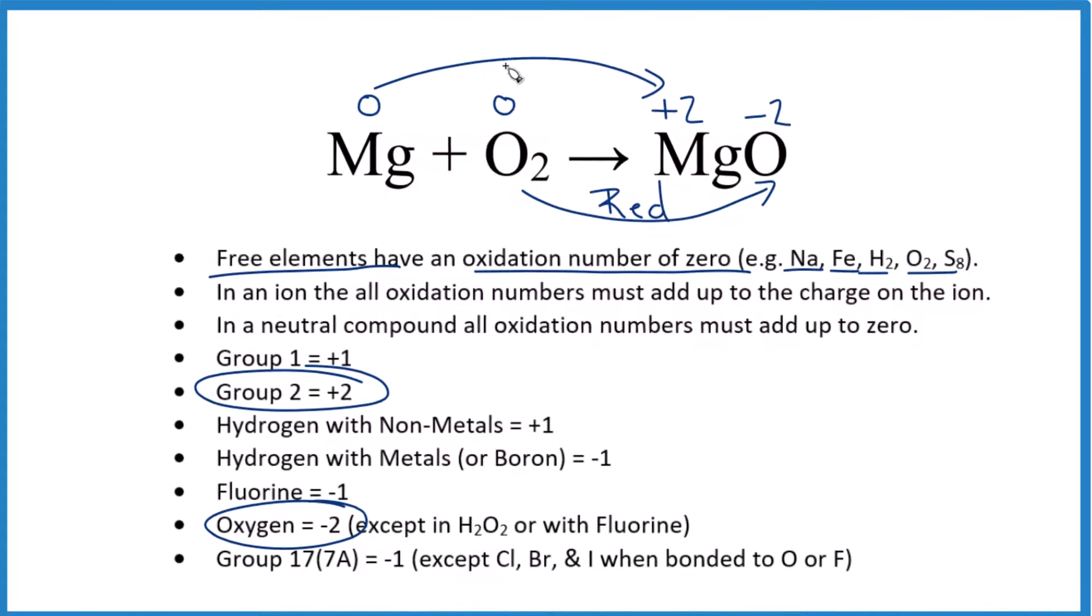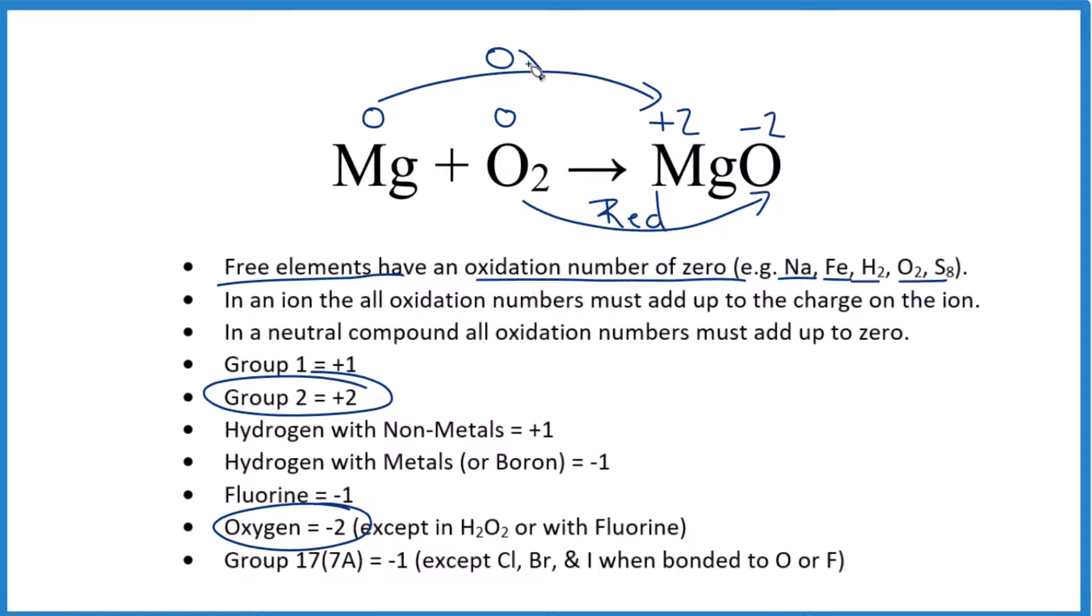That means up here we'll have oxidation, it makes sense, this number got larger. So we lost electrons here, we gained them here, reduction and oxidation, that means Mg plus O2 yields MgO, it's a redox reaction.